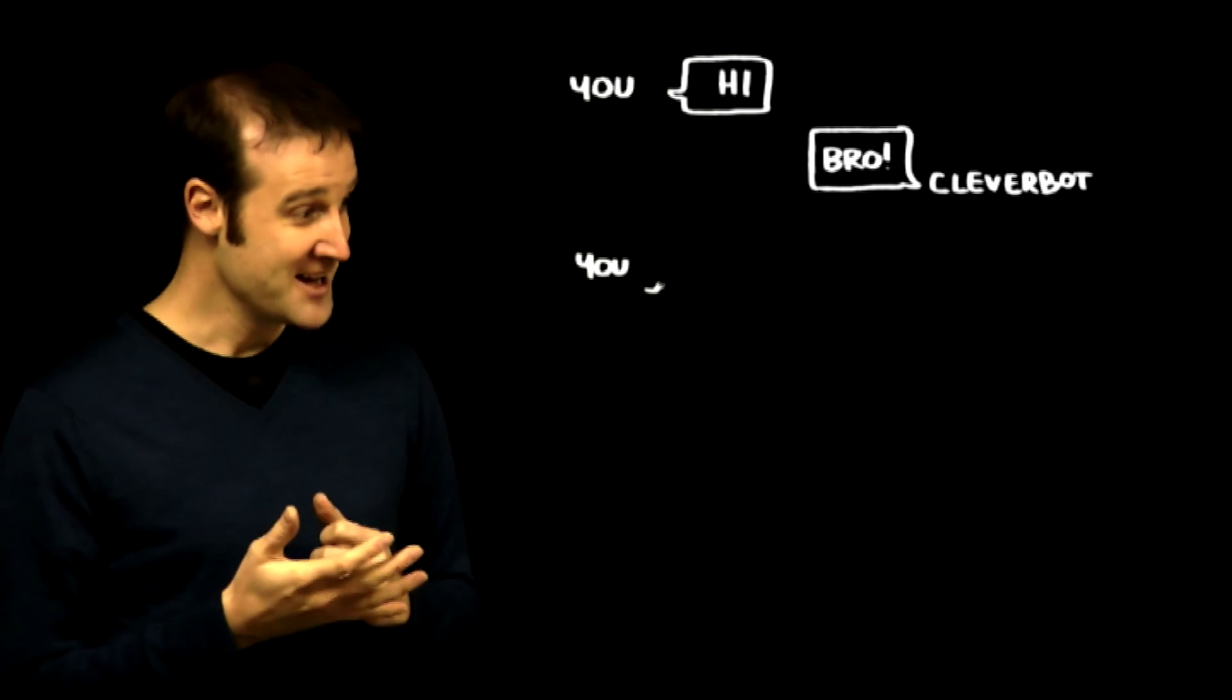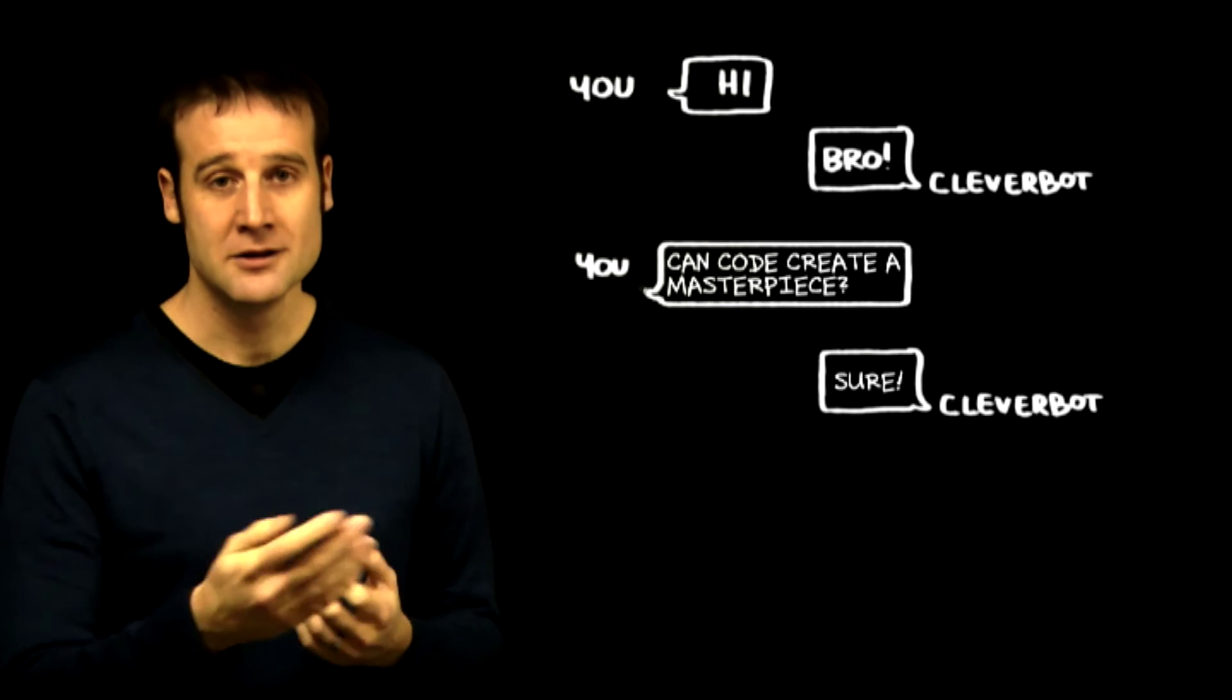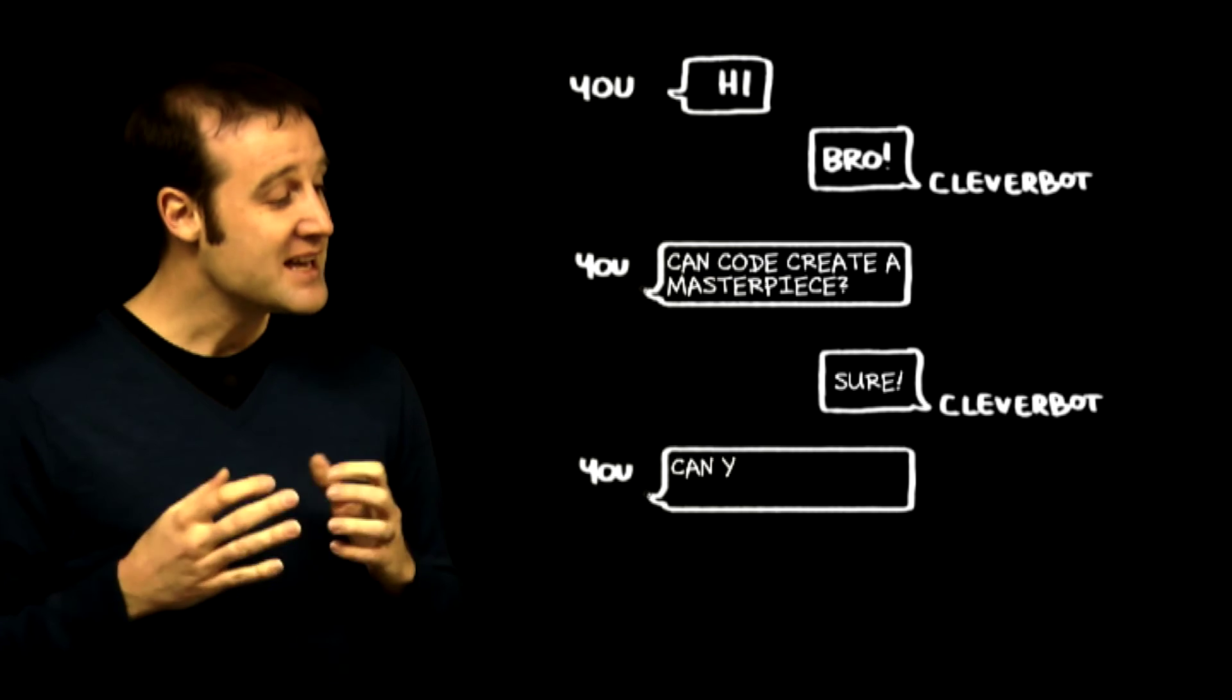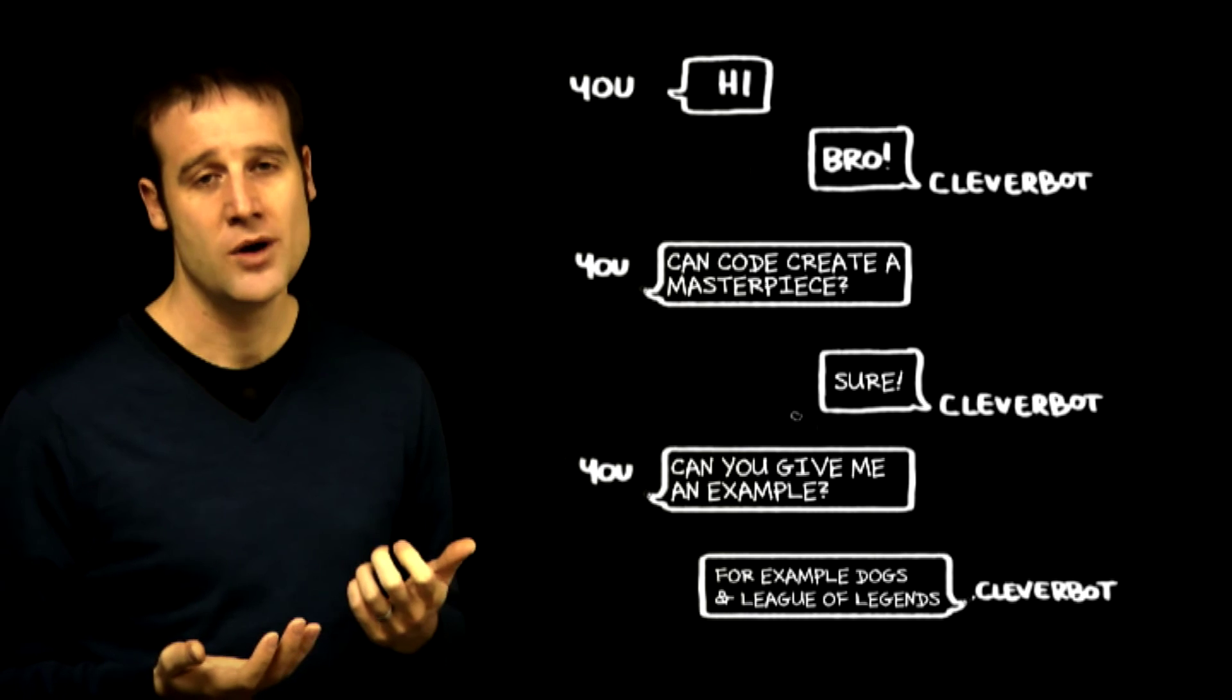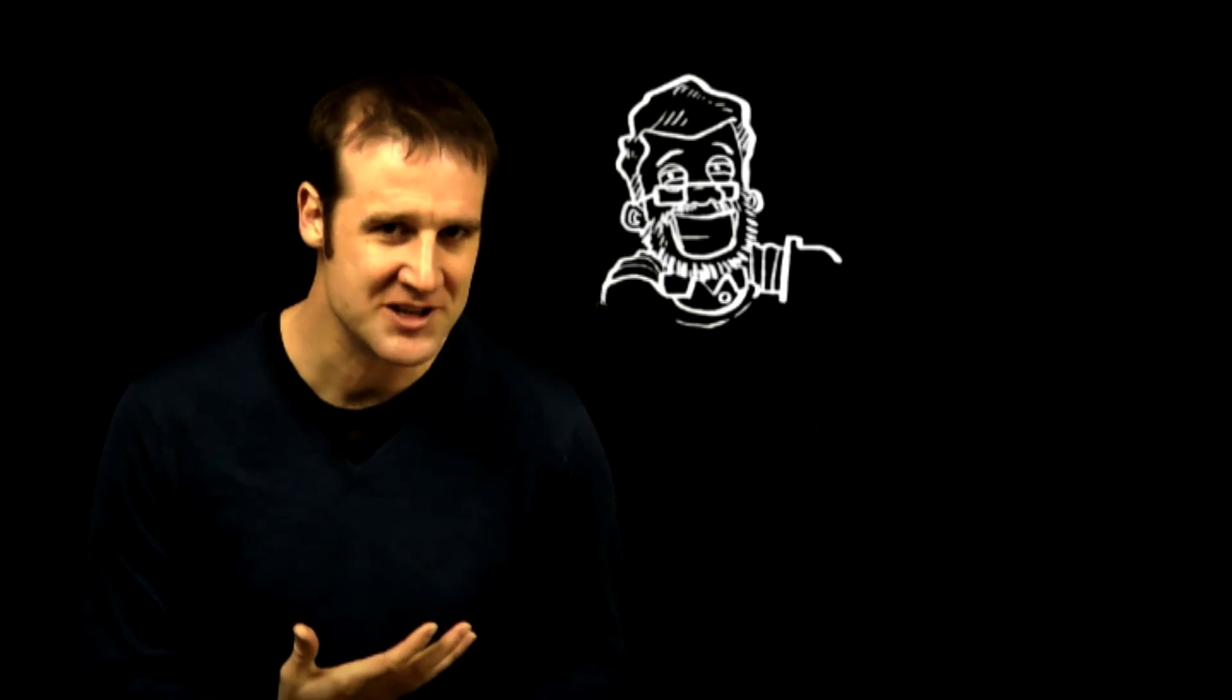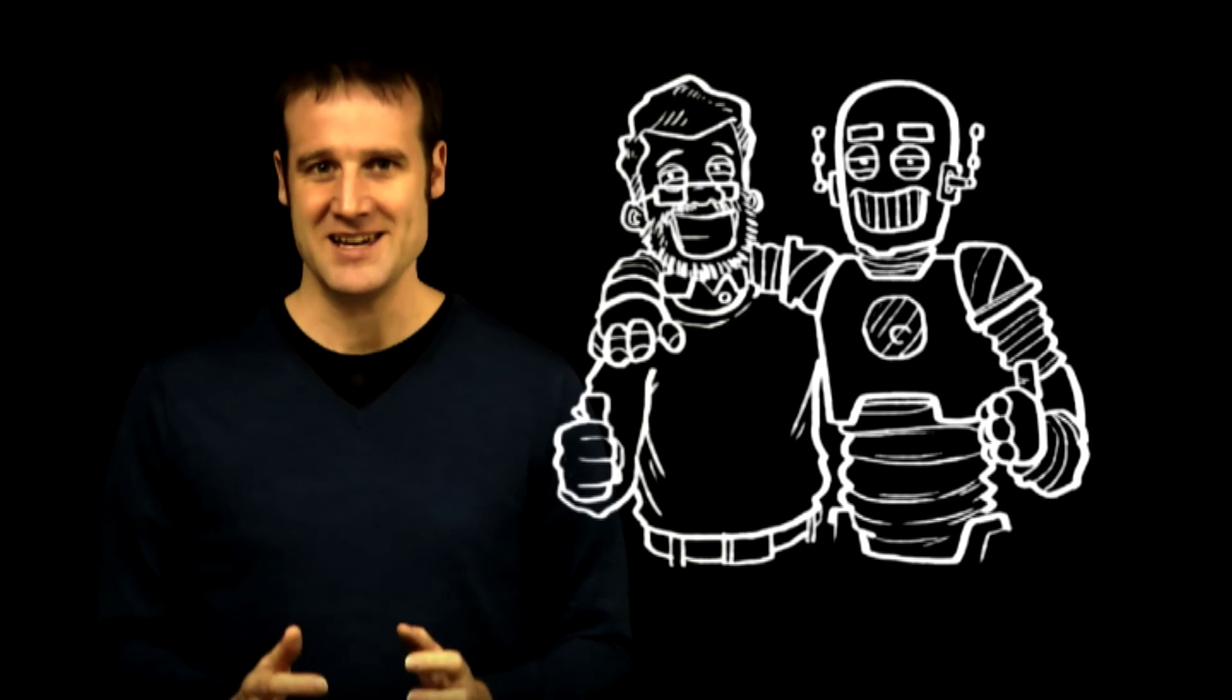Okay, Cleverbot, can code create a masterpiece? 'Sure.' Okay, well, that's concise and to the point. Cleverbot, can you give me an example? 'For example, dogs and League of Legends.' Okay, so there is a little way to go before computers can be truly intelligent, and we need a new generation of cunning programmers and people writing genius code to make it possible.